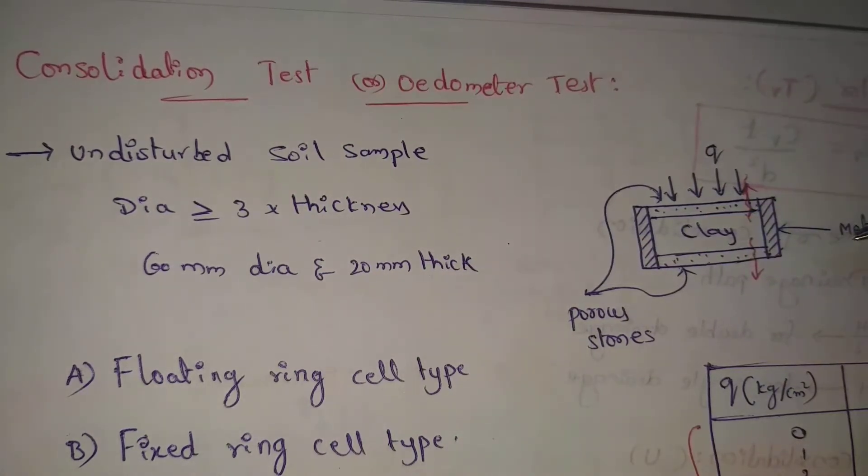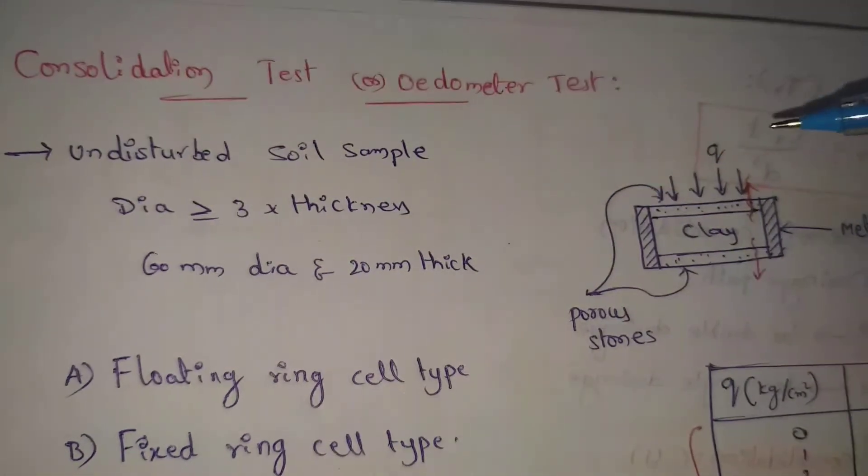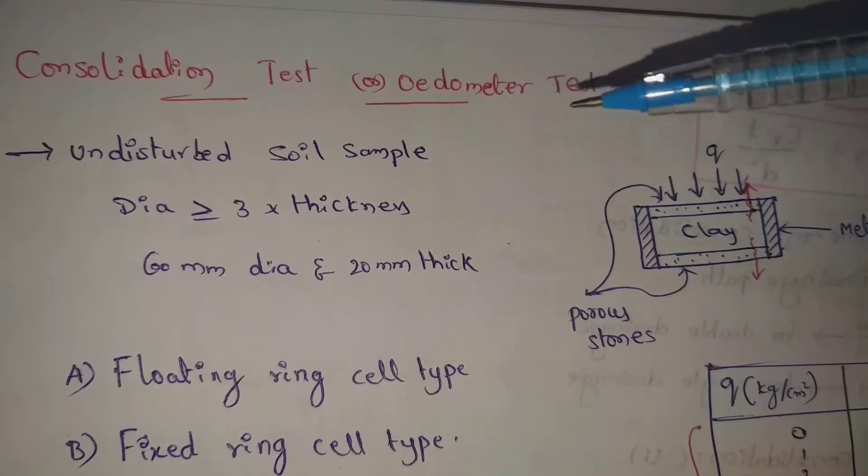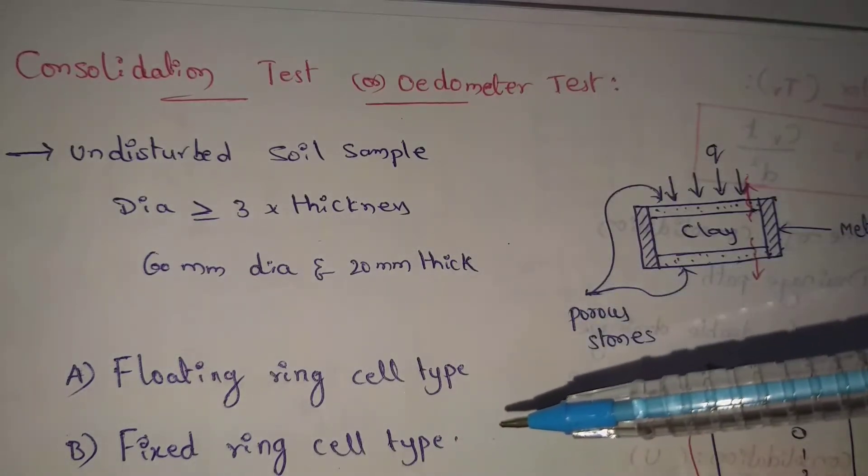This is a metallic box in a circular shape. The diameter is greater than or equal to 60 mm. There are two methods: first one is floating ring cell type, second one is fixed ring cell type.